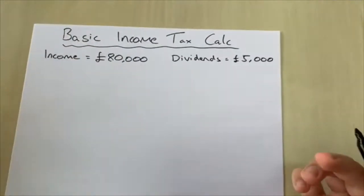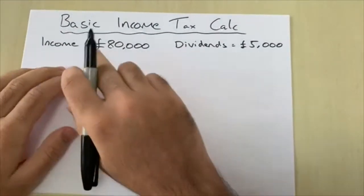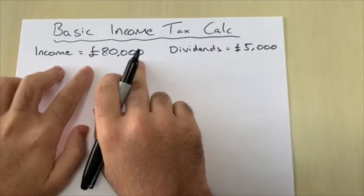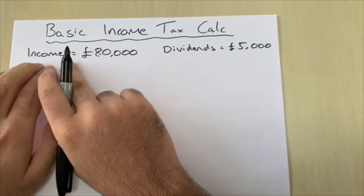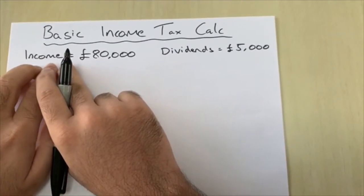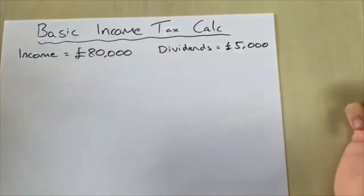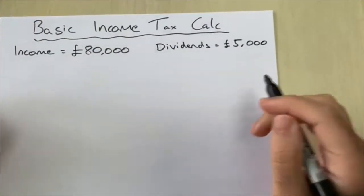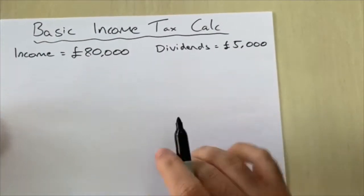Moving on to a worked example: let's say I earn £80,000 of employment income from my employer, and I have dividend income of £5,000. How do I calculate my income tax?